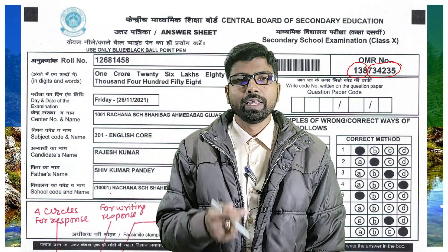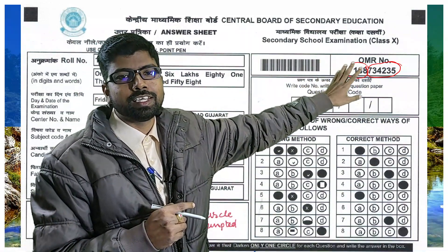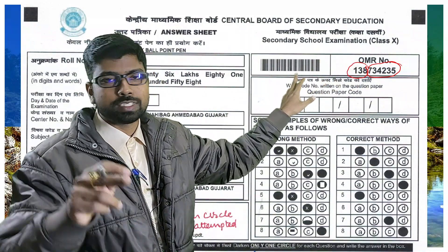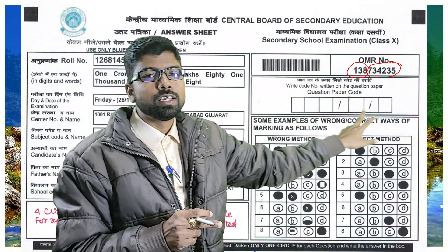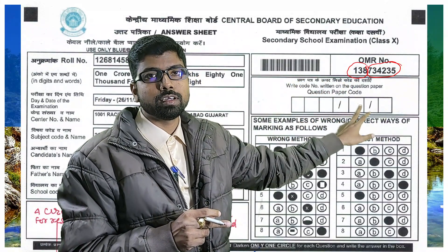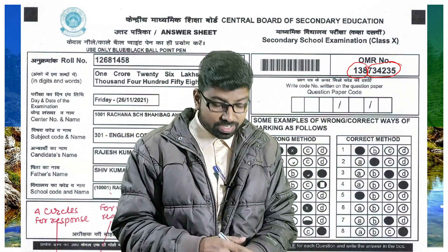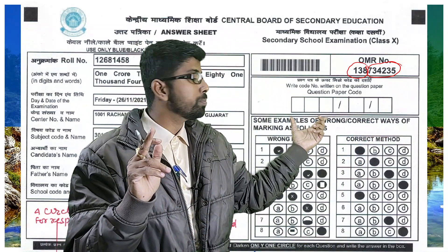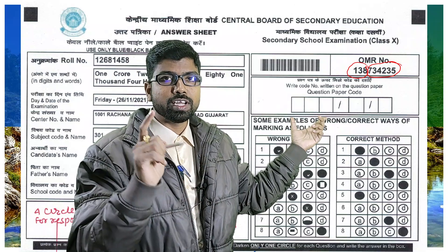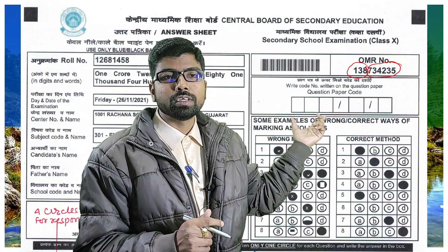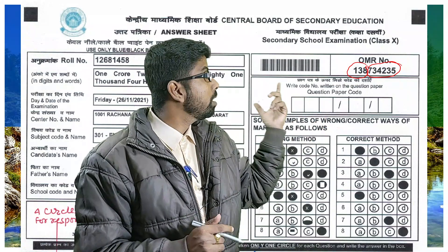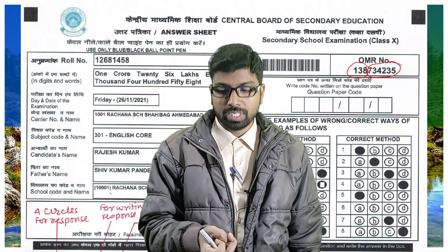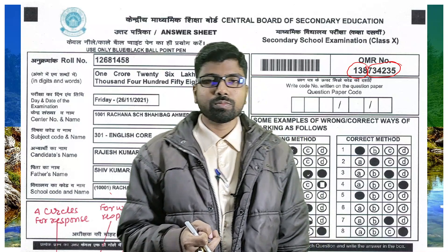Below the OMR number there is also a barcode carrying the same information. Students must write the question paper code number in the designated box — invigilators should be very careful to ensure students do this. Also, the roll number of the student must be written on the question paper. These are the key responsibilities of the invigilator.